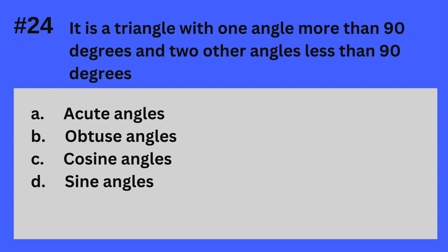Question 24. It is a triangle with one angle more than 90 degrees and two other angles less than 90 degrees.